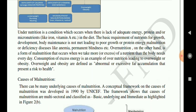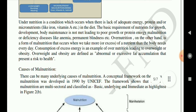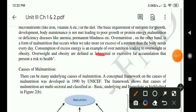Overnutrition, on the other hand, is a form of malnutrition that occurs when we take more of a nutrient than the body needs every day. Consumption of excess energy is an example, leading to overweight and obesity. Overweight and obesity are defined as the abnormal and excessive accumulation of fat that presents a risk to health.